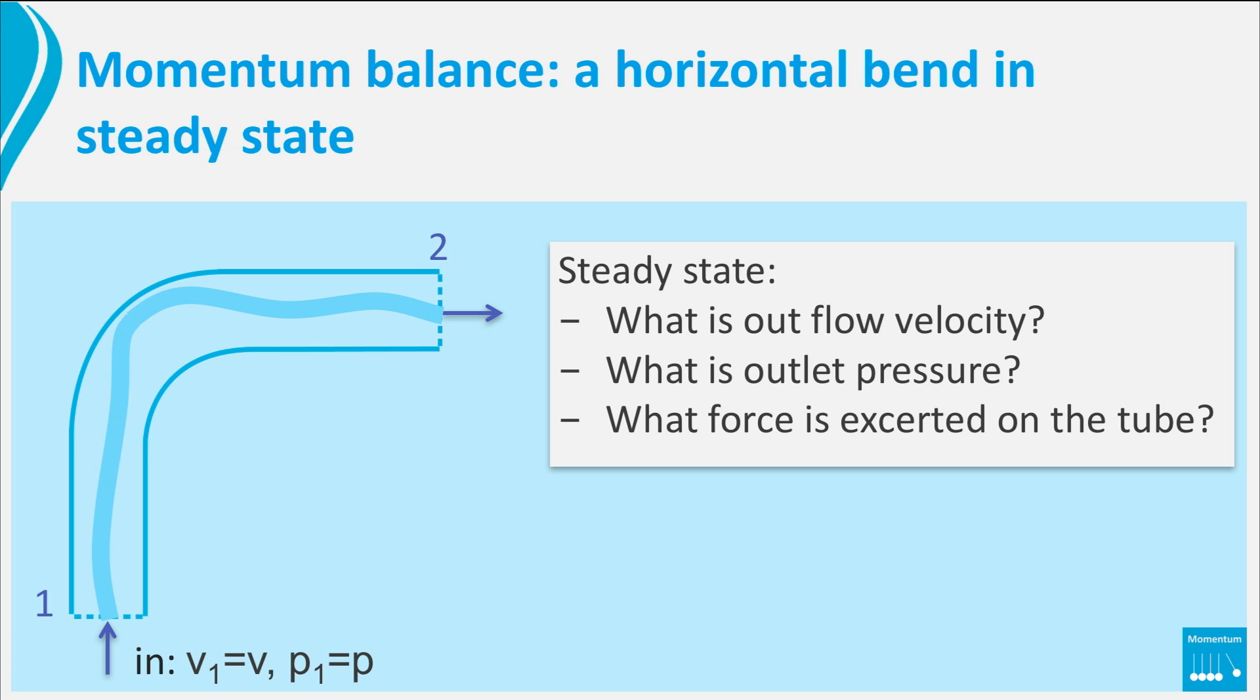Alright, first we make the picture more complete, and draw in what we know and what we need to find out. Next, let's think for a moment about a strategy to solve this problem. First we need the outlet velocity. In which balance does it show up? Well, actually in all three, mass, energy and momentum.